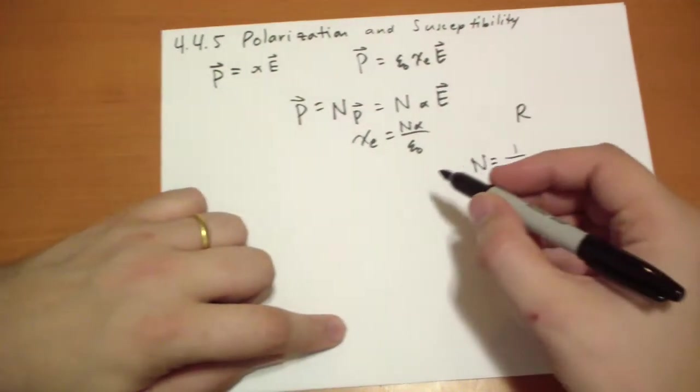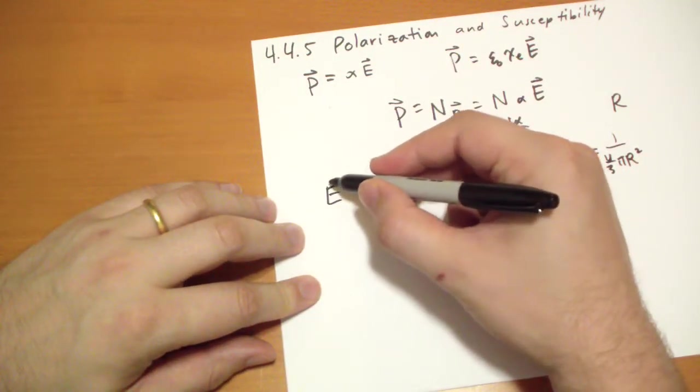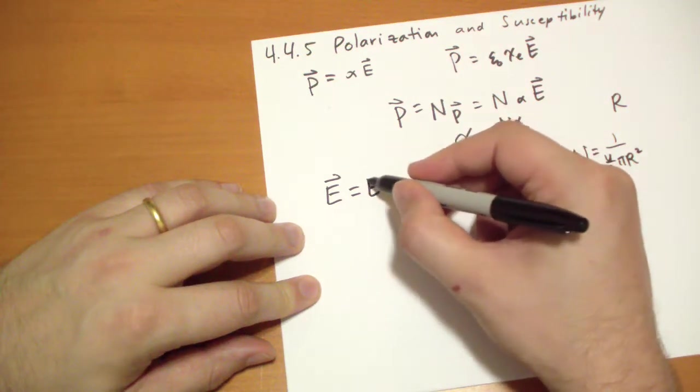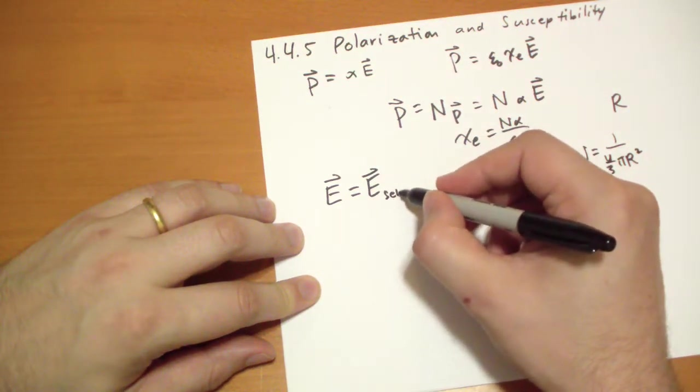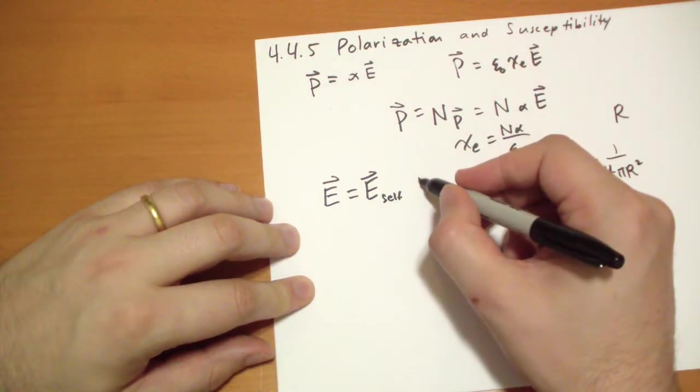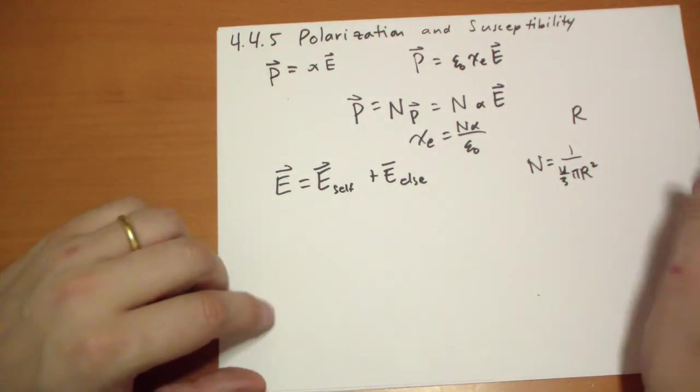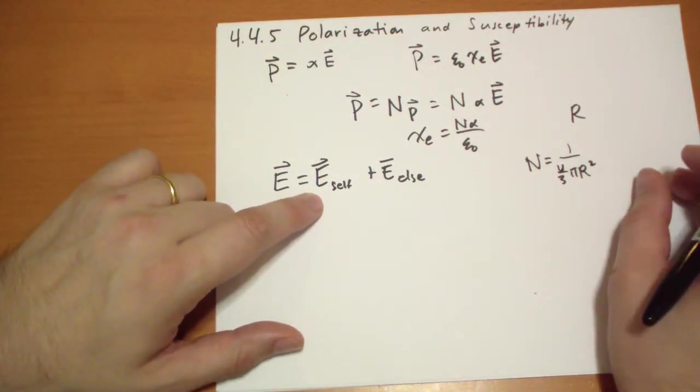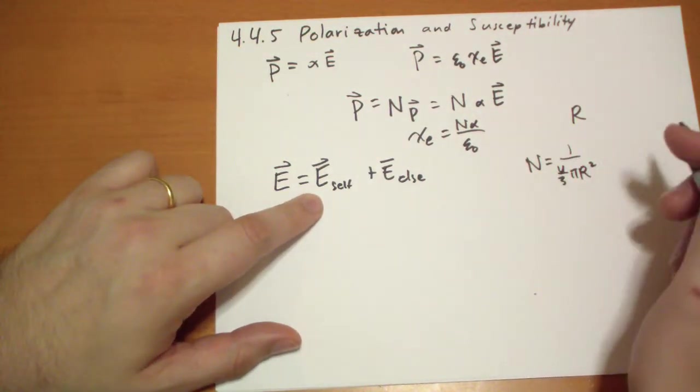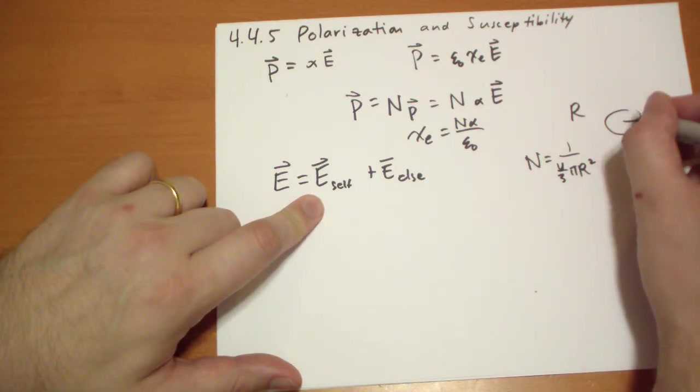So now we can write the electric field, the macroscopic electric field, as equal to the electric field due to that atom, plus the electric field due to everything else outside of that atom. This is actually the average of the atomic field within this sphere that we're talking about. A sphere here, radius R.